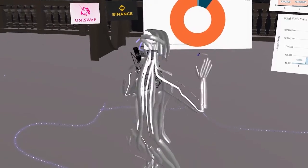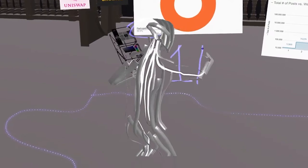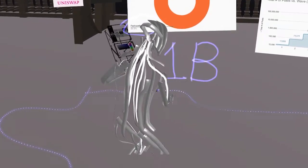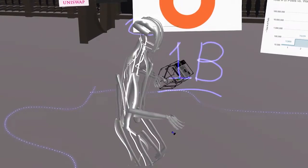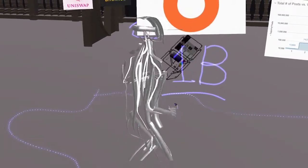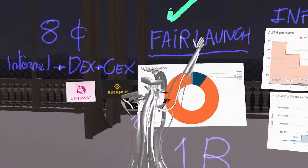The total supply of auth is 1 billion auth. So eventually 1 billion auth are going to be minted by the people on the platform. So in conclusion for allocation, Authenticity gets a pass.